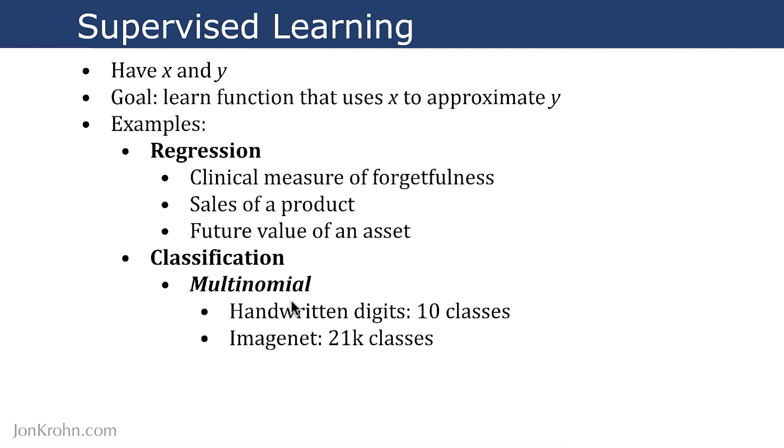Another multinomial classification problem, again, a common deep learning example, is using the ImageNet data set, which contains millions of images on the internet that are broken into 21,000 classes.